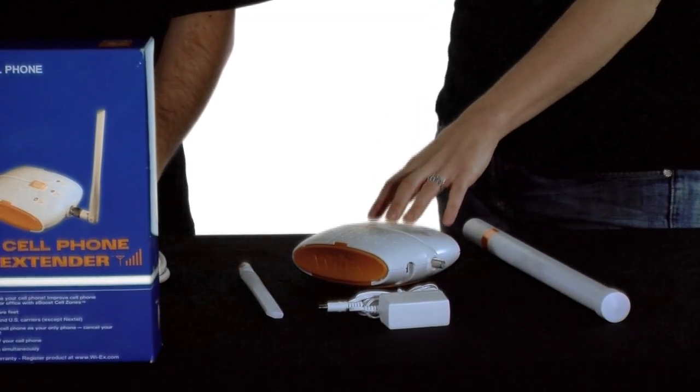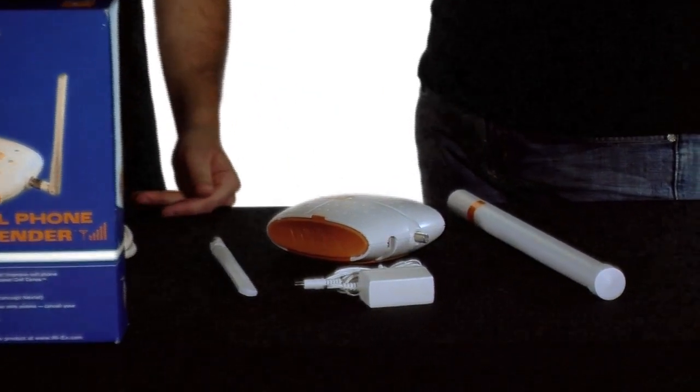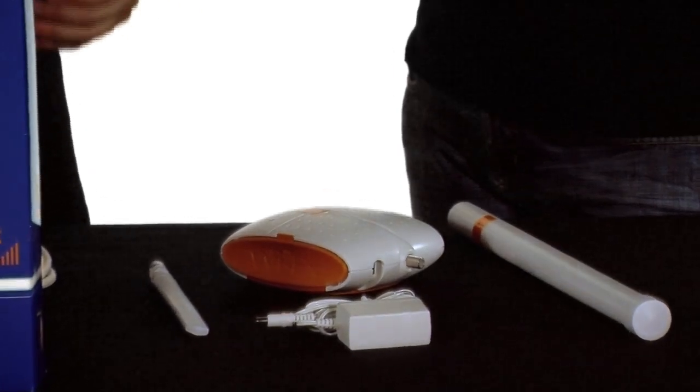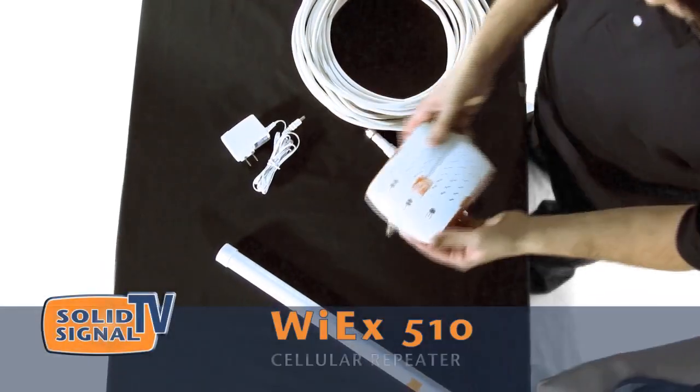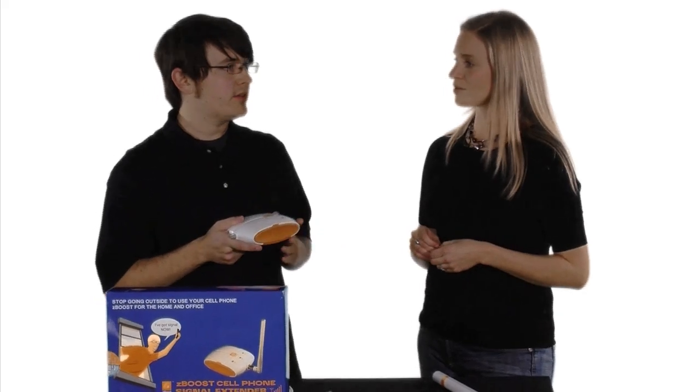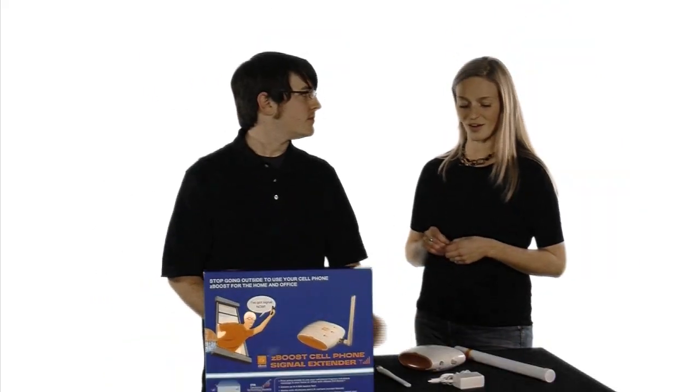Now I understand that this is among a series of extenders, how do I know which one is right for me? Good question. There's three of them. Basically it depends what your cell phone carrier is. Some run on 800 megahertz, some run 1900 megahertz and some run both. So this one for instance, the YX-510 is a dual band unit, it works for any phone. So if you're not sure what frequency your carrier is on, you can just get the 510, it's a safe bet.